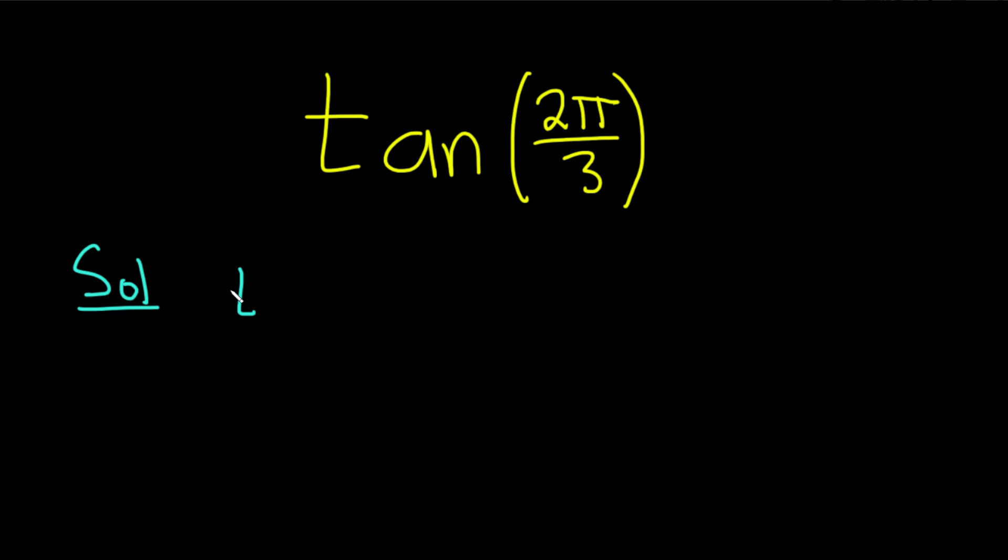The first step is to rewrite this. So the tangent of 2π over 3 can be written in a different way. Tangent is equal to sine over cosine, so this is the sine of 2π over 3 divided by the cosine of 2π over 3. So we just need to figure out what these values are.